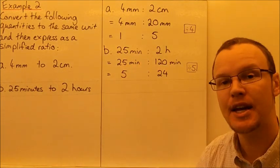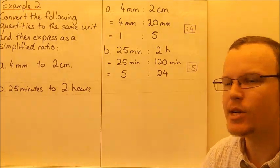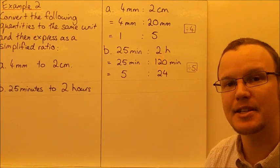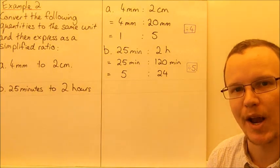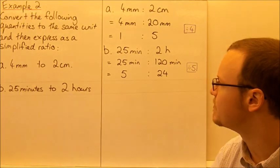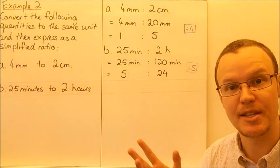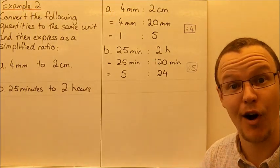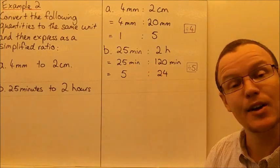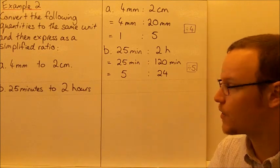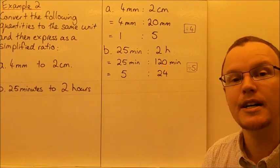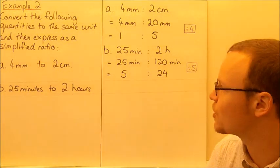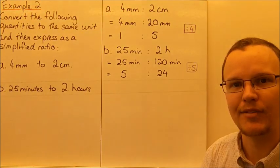Looking at time: twenty-five minutes to two hours. We need to get these both in the same unit, so we convert the hours to minutes. Twenty-five minutes remains unchanged, but two hours equals one hundred and twenty minutes, because there are sixty minutes in one hour — sixty times two is one hundred and twenty. Now they're both in the same units we can remove those units and express it as a ratio. The highest common factor of twenty-five and one hundred and twenty is five. Twenty-five divided by five is five, and one hundred and twenty divided by five is twenty-four. So the simplified ratio for this time is five to twenty-four.